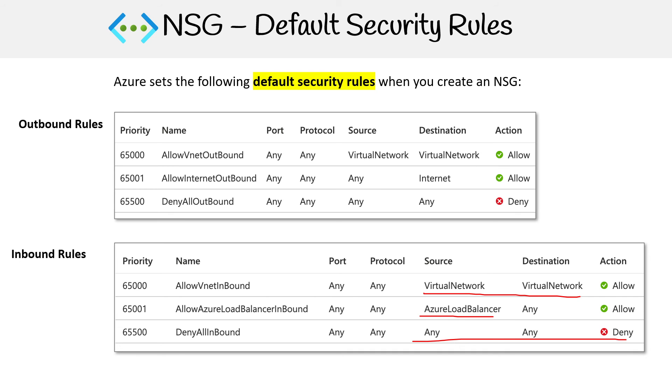Then for your outbound rules, it's allowed to go to any other virtual network, it's allowed to make its way out to the internet, and then everything else is denied.